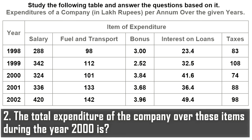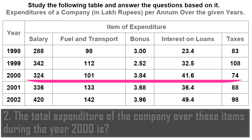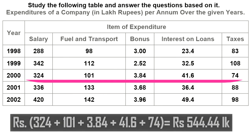The next question asks for the total expenditure of the company over all items during the year 2000. To find this answer, you simply add all the values given in the column corresponding to the year 2000. This concludes the illustration with examples on table charts.